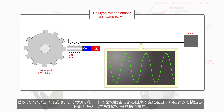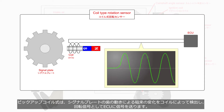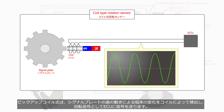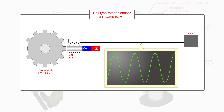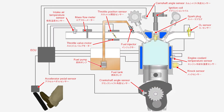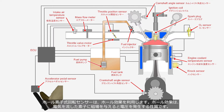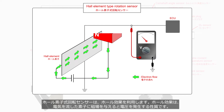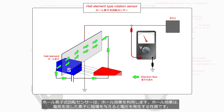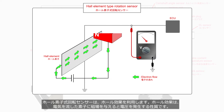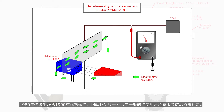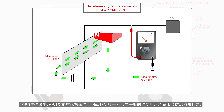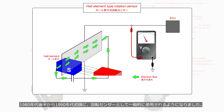The magnetic pickup type detects changes in magnetic flux caused by the movement of teeth on a signal plate using a coil, and transmits the signal to the ECU as a rotation signal. A hall element sensor utilizes the hall effect, generating a voltage when an electric current passes through the element and it is subjected to a magnetic field. Hall element sensors became commonly used as rotation sensors from the late 1980s to the early 1990s.